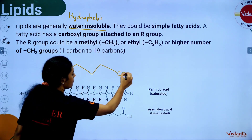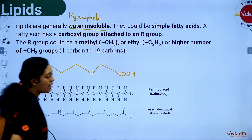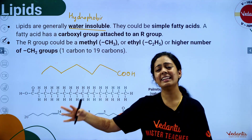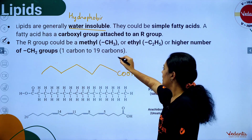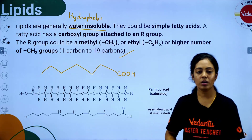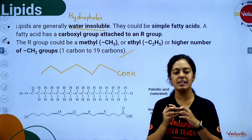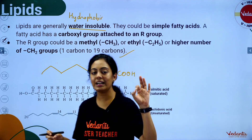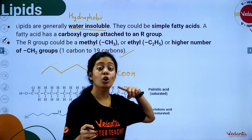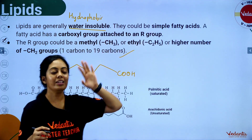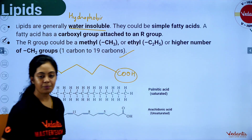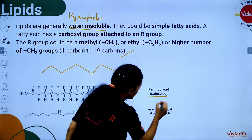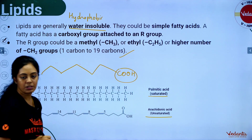A fatty acid is a long chain hydrocarbon attached to a carboxylic group. The R group could be methyl, ethyl, or it can have a number of carbons up to 90. So the basic unit of lipids is fatty acids. Fatty acids are defined as long chain hydrocarbons with a carboxylic group attached to their end. There are two types of fatty acids: saturated and unsaturated.